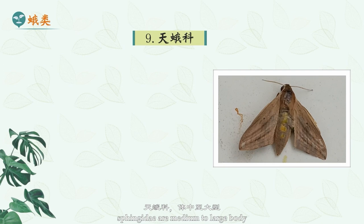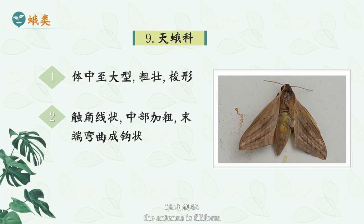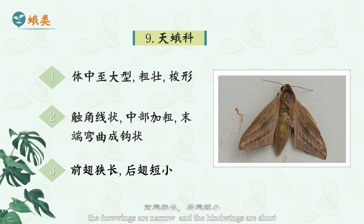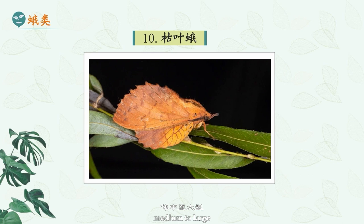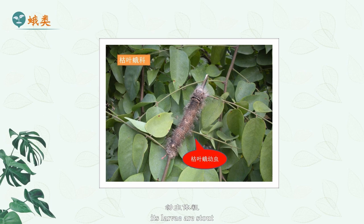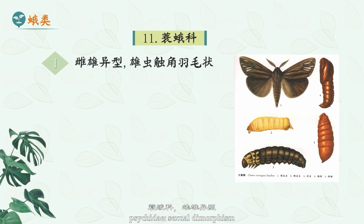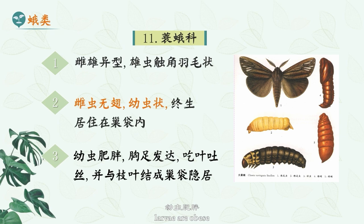Sphingidae: medium to large body, stout and fusiform. The antennae are filiform, thickened in the middle and bent at the end into a hook shape. The forewings are narrow and the hindwings are short. The larvae are fat, with a caudal horn on the dorsal side of the eighth abdominal segment. Lasiocampidae: medium to large, stout and hairy, named after resembling dead leaves. Its larvae are stout and hairy. Psychidae: sexual dimorphism. Male antennae are feathery. Females are wingless and larva-like. Larvae are obese, with well-developed thoracic legs, eating leaves and spitting silk.